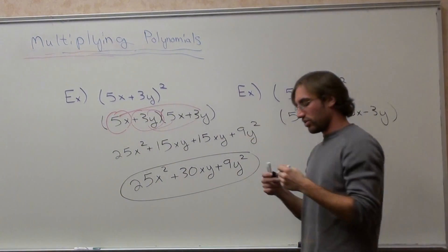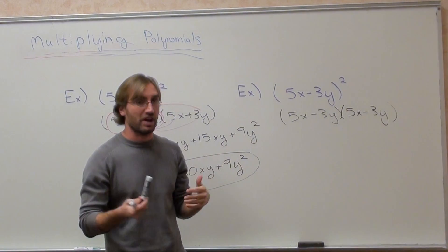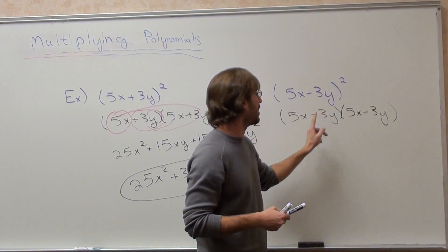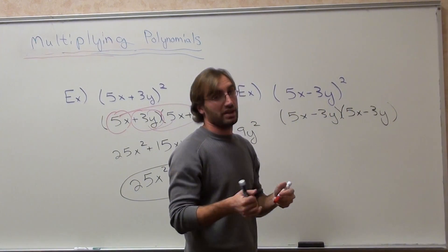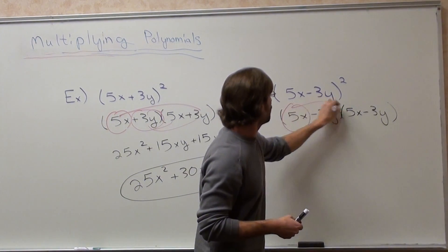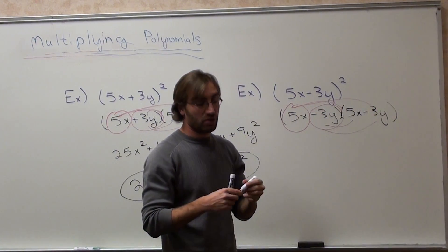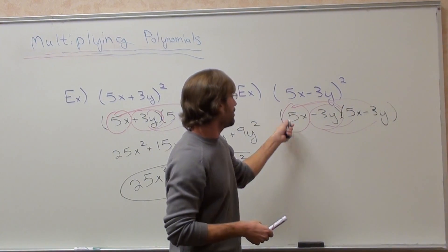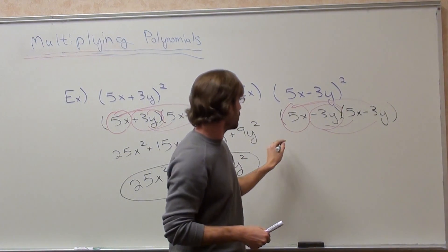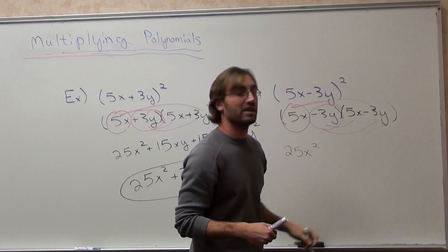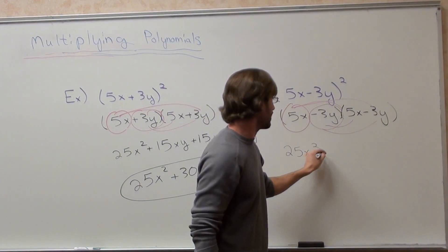5x subtracting 3y in quantity times another quantity of 5x minus 3y. Distribute twice. 5x times 5x. 5x times negative 3y. Negative 3y times 5x. Negative 3y times negative 3y. There is a relationship here, too. 5x times 5x is 25x squared.